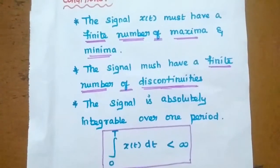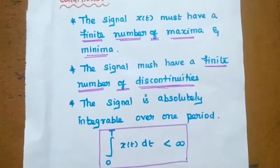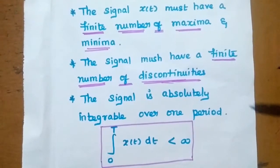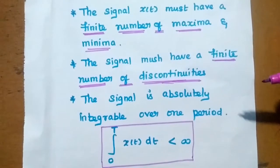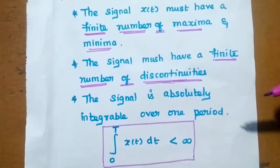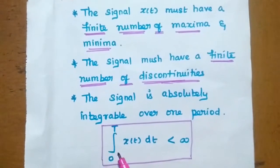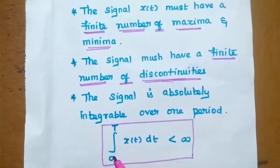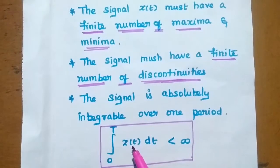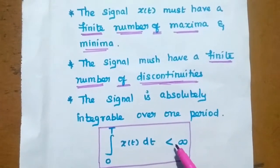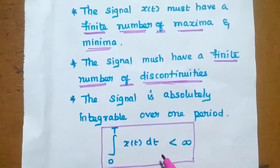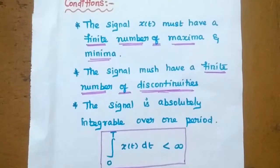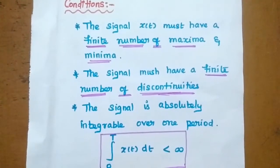Third condition is the signal is absolutely integrable over one period. Absolutely integrable means the result of the integration should be finite over one period. That is given like this: 0 to T, where T is the one time period of the periodic signal. Integration over 0 to T, the given signal X(t) dt, that value should be less than infinity. Less than infinity means it is a finite value. So these three are the conditions of Fourier series.